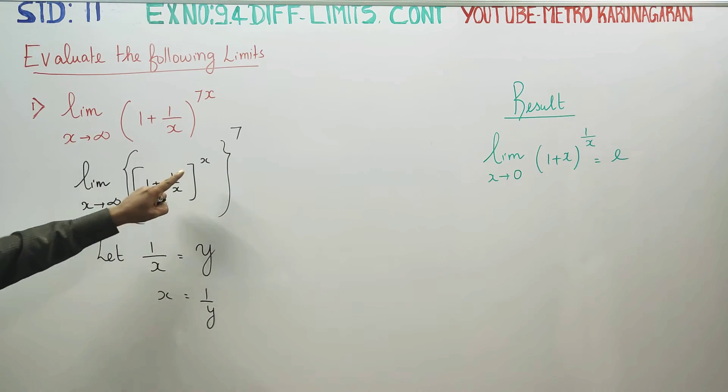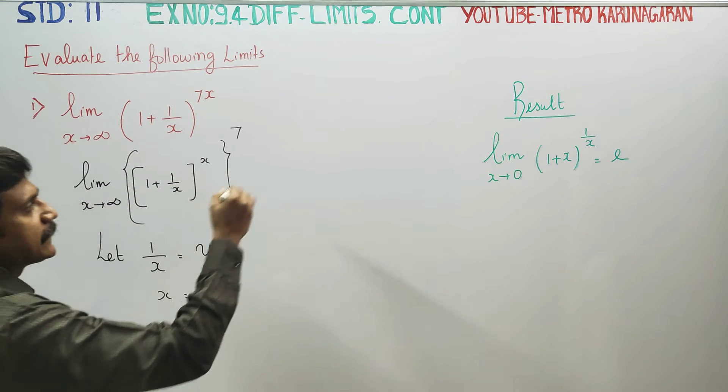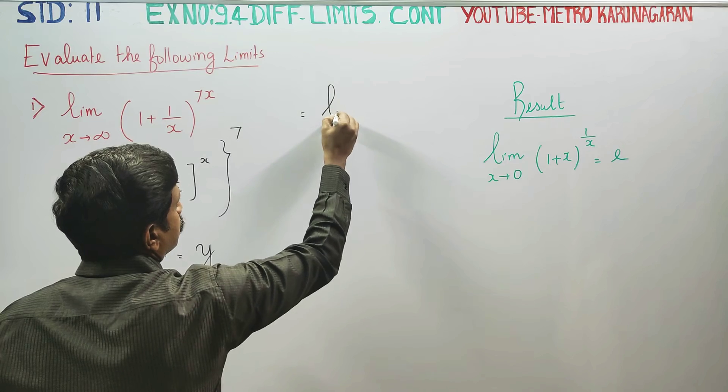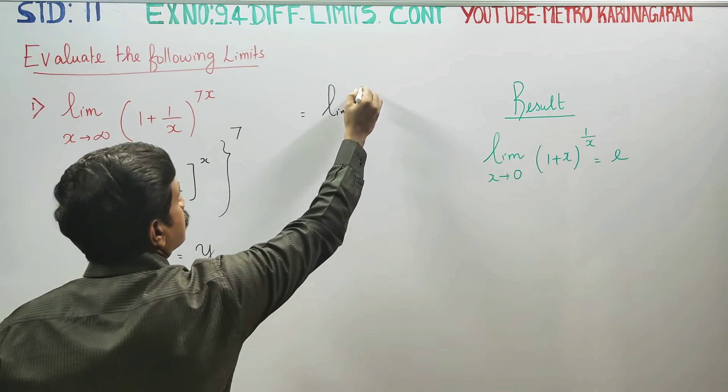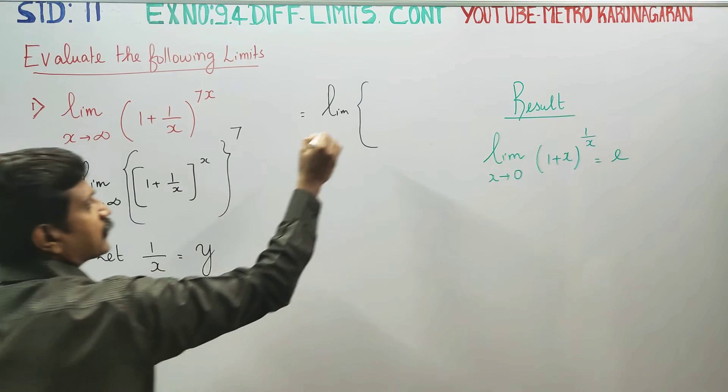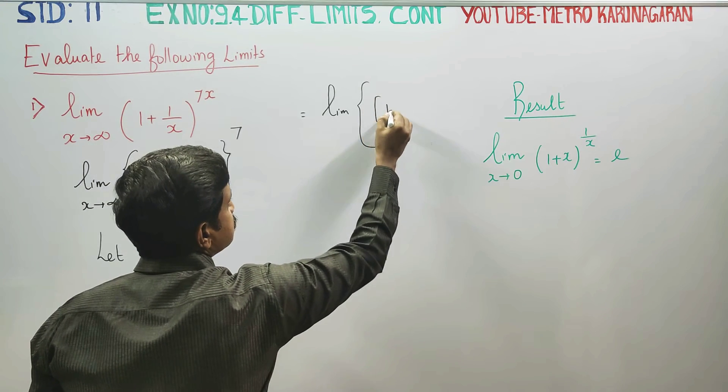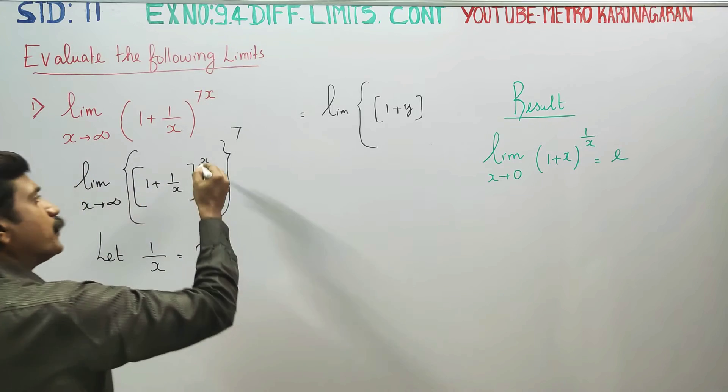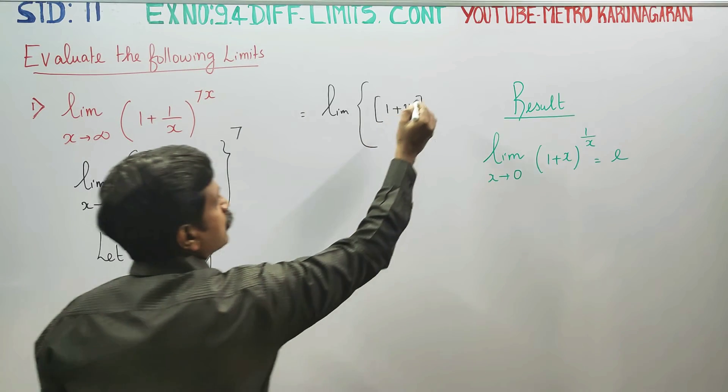Now substituting x with y in the sum, the limit becomes: limit as 1 plus y, and x is replaced by 1 by y.